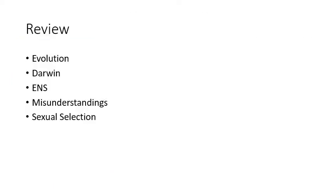The three conditions of natural selection — variants, heredity, and selection — must still be met in sexual selection. It's just that variants which increase reproduction, even if they hinder survival, are selected for because they confer a reproductive advantage. In review, we talked about evolution, briefly about Darwin, evolution by natural selection, common misunderstandings, and sexual selection and how it ties everything together. There's so much more with evolution — I could talk about it an entire semester — so if you're interested, go look into it.